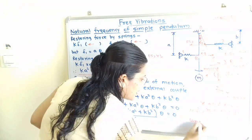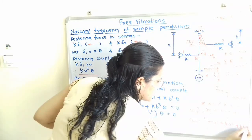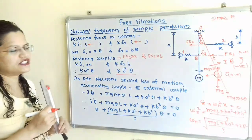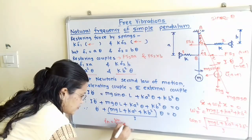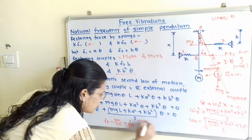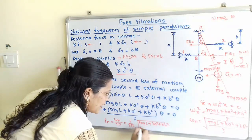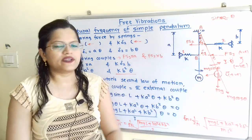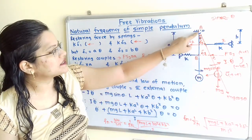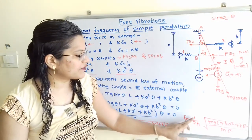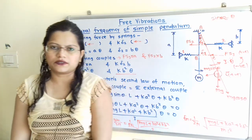Therefore, omega N equals the square root of (Mg L plus K A squared plus K B squared) divided by I. The natural frequency Fn equals omega N divided by 2 pi, so Fn equals (1 divided by 2 pi) times the square root of (Mg L plus K A squared plus K B squared) divided by I. Here I is the mass moment of inertia of the bob, equal to M L squared, where M is the mass and L is the length of the thread.